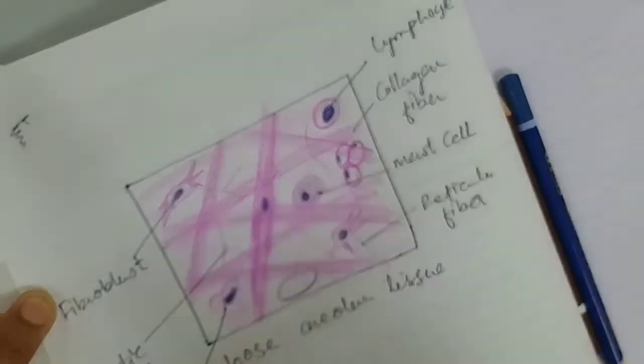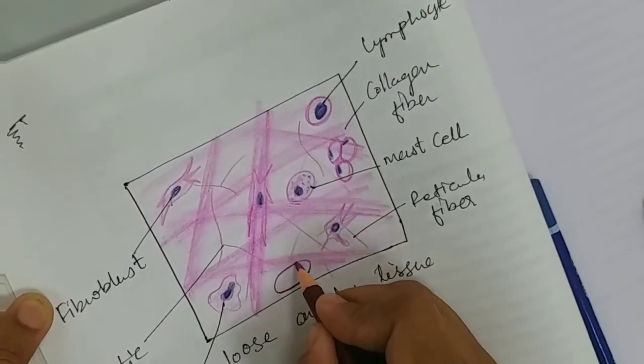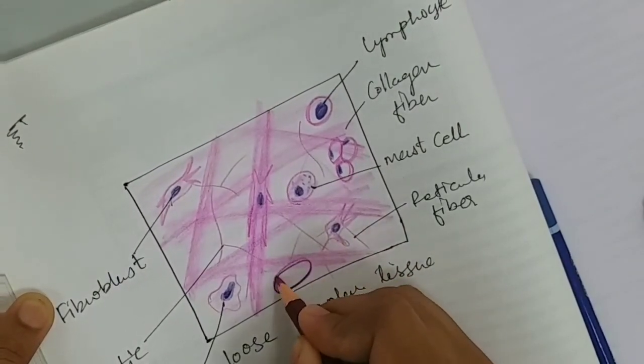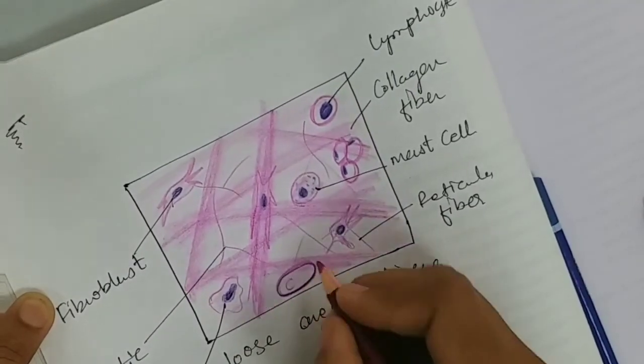It has eccentrically placed nucleus. The nucleus shows a cartwheel appearance and it's involved in synthesis of antibodies.